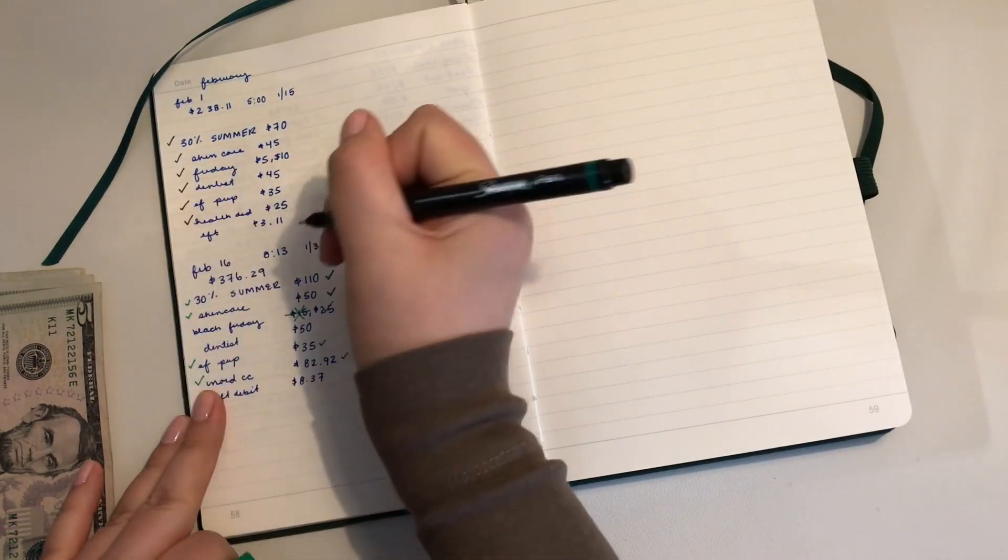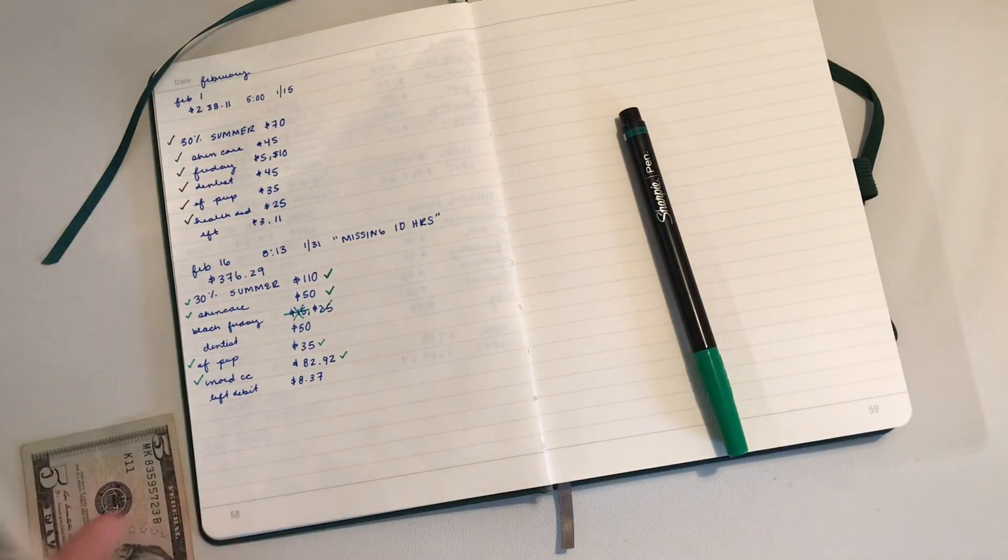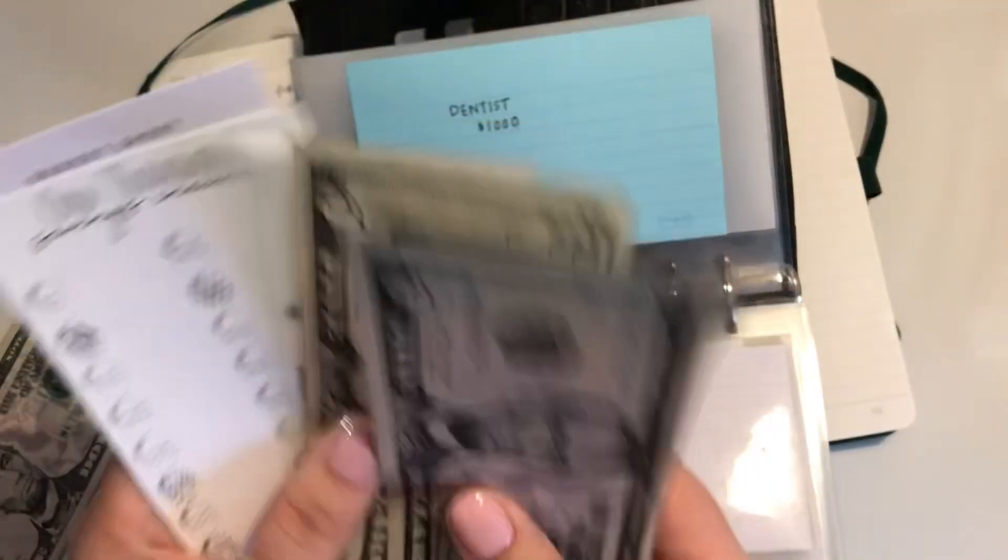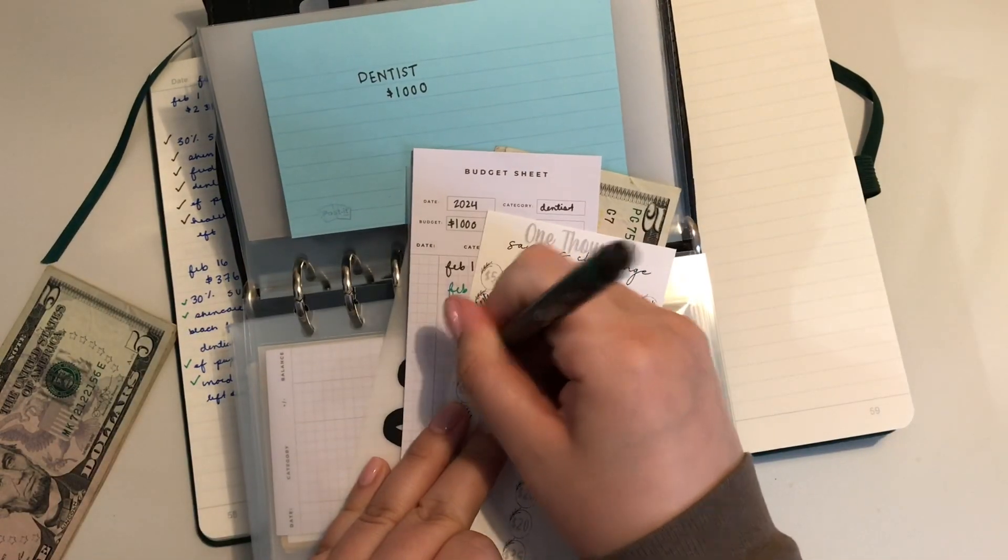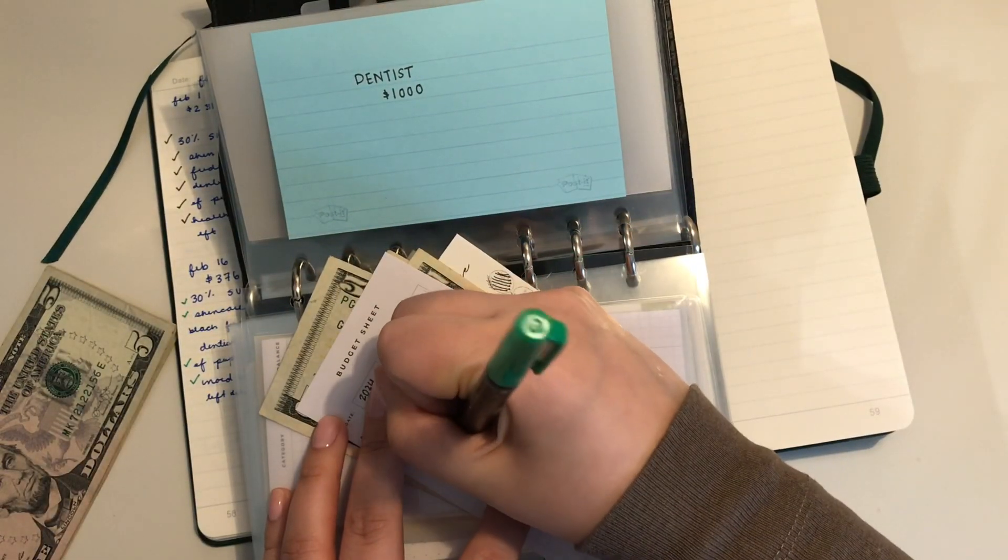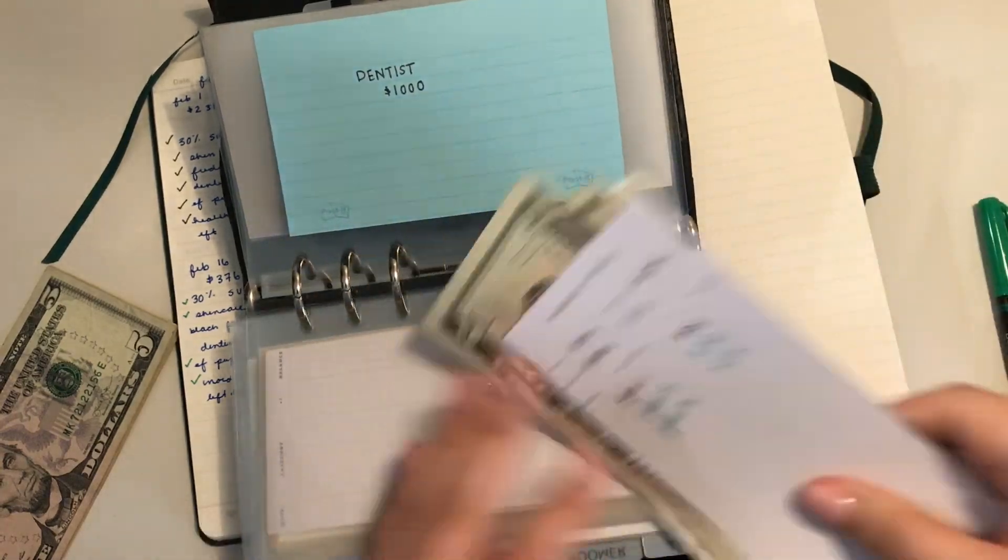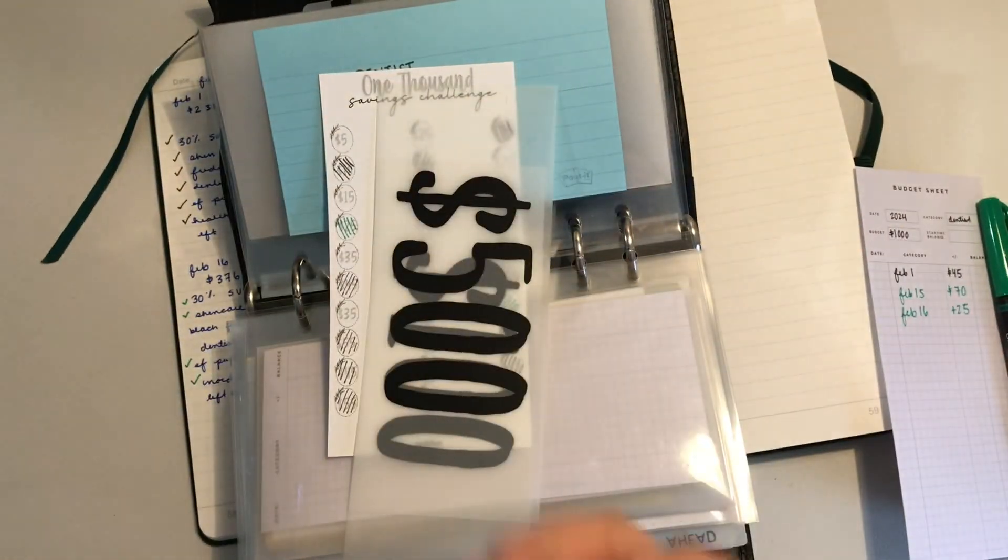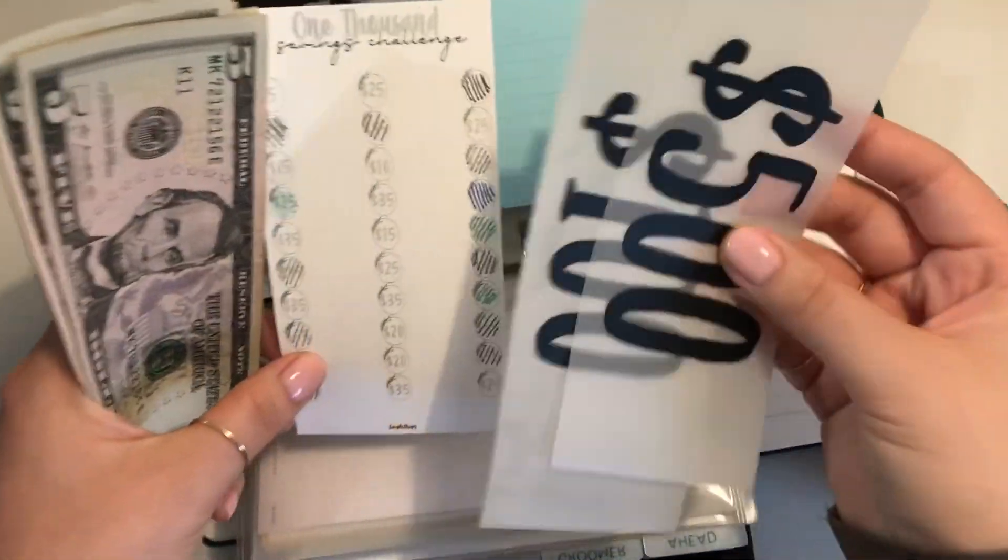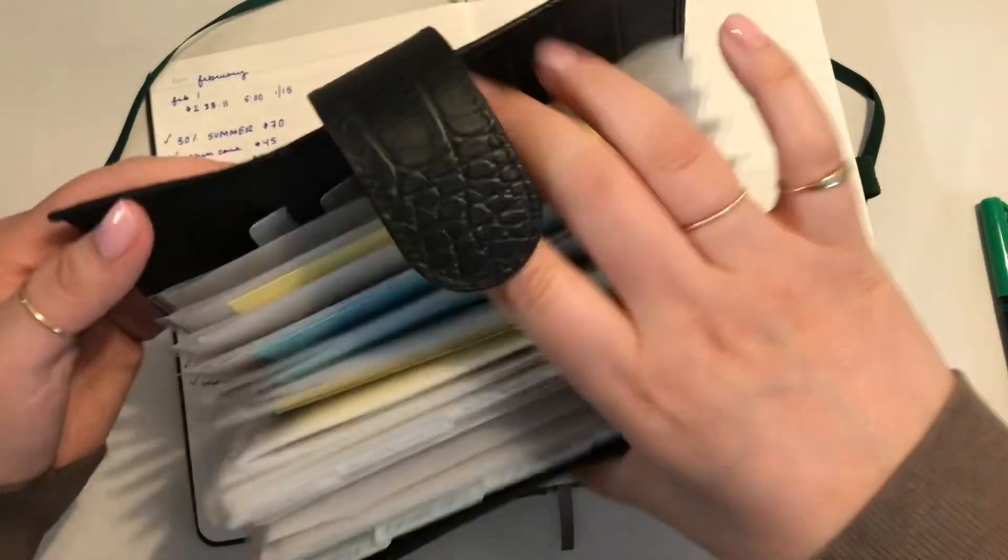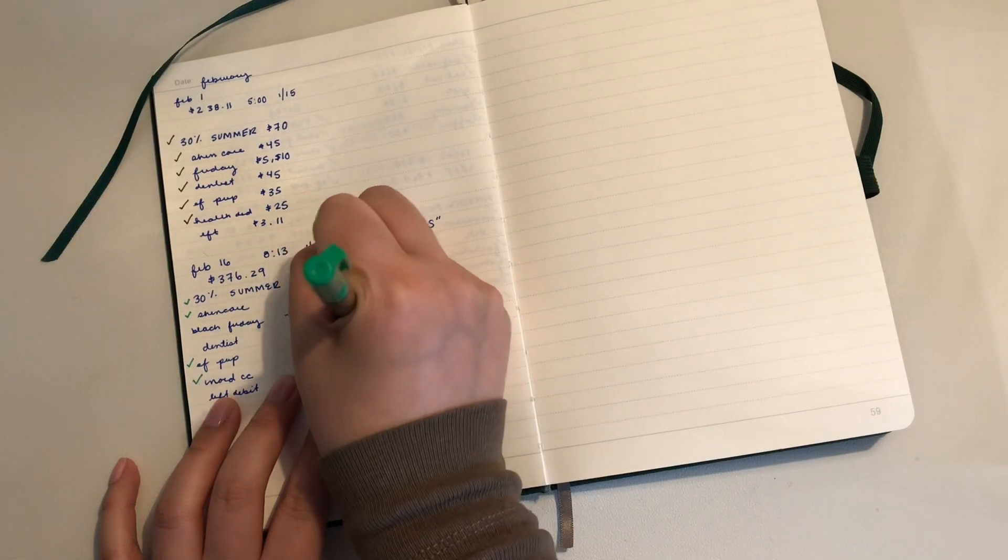And then this is dentist. Emergency fund for dentist. I have $25 left, so that's going to go to dentist. Dentist is going to get $25 from February 16th paycheck. That is done.